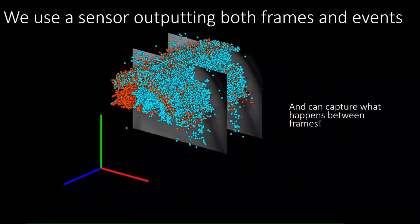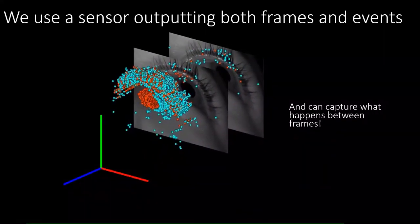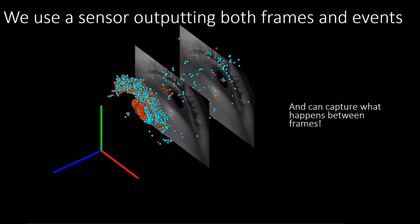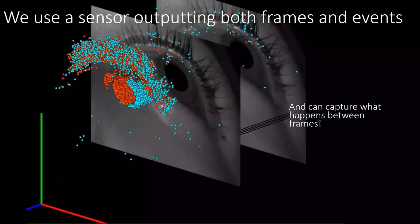Our system uses a sensor that reports both synchronously sampled frames and asynchronous events as seen here. The events report eye motion thousands of times in between each frame.